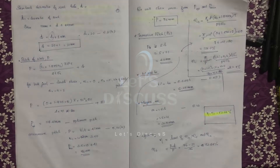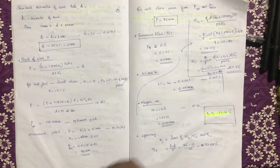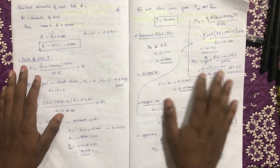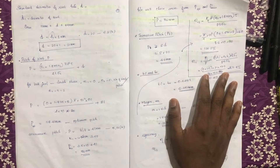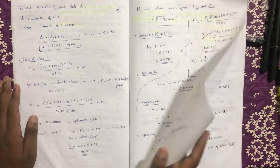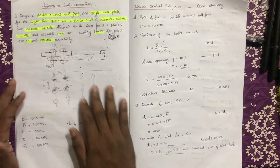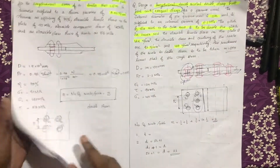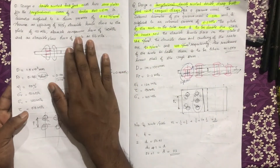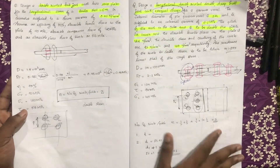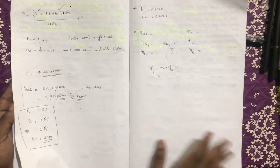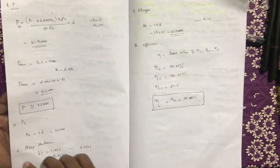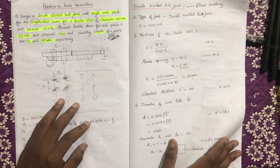This is part 4 of the Boiler Joints video. If you are doing this video, you will find part 5. Now we have part 3 and part 4.